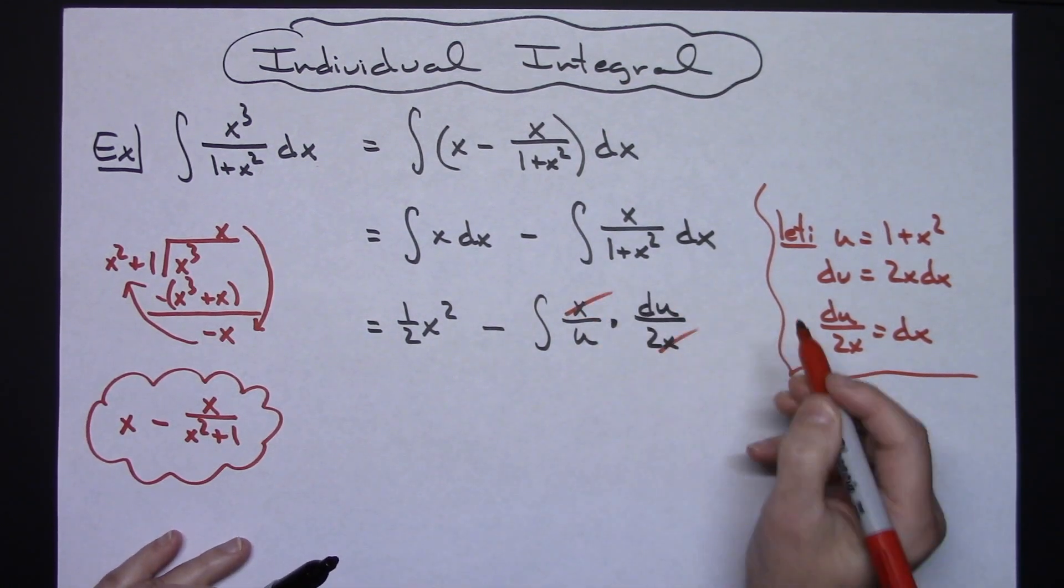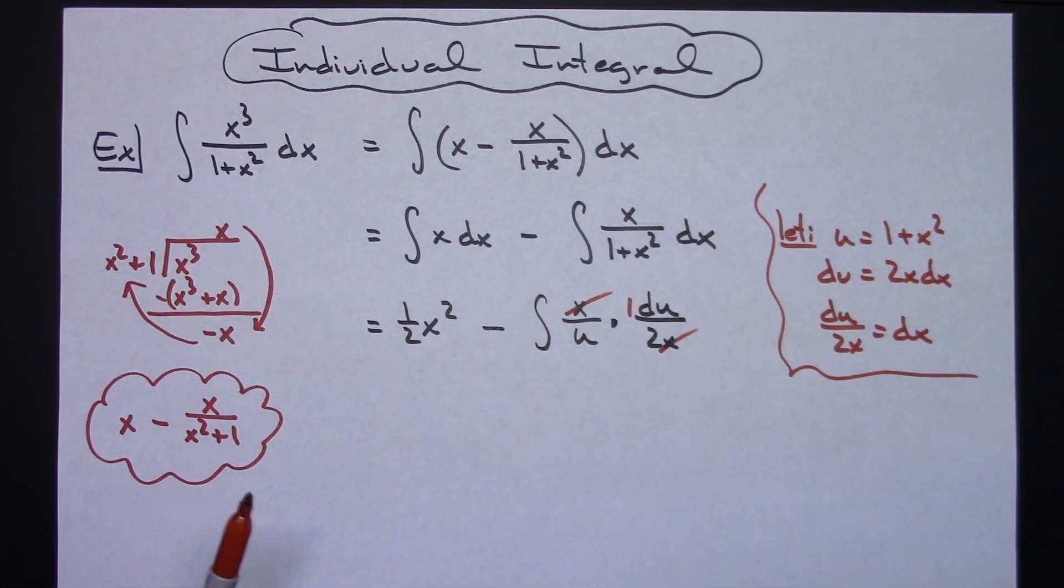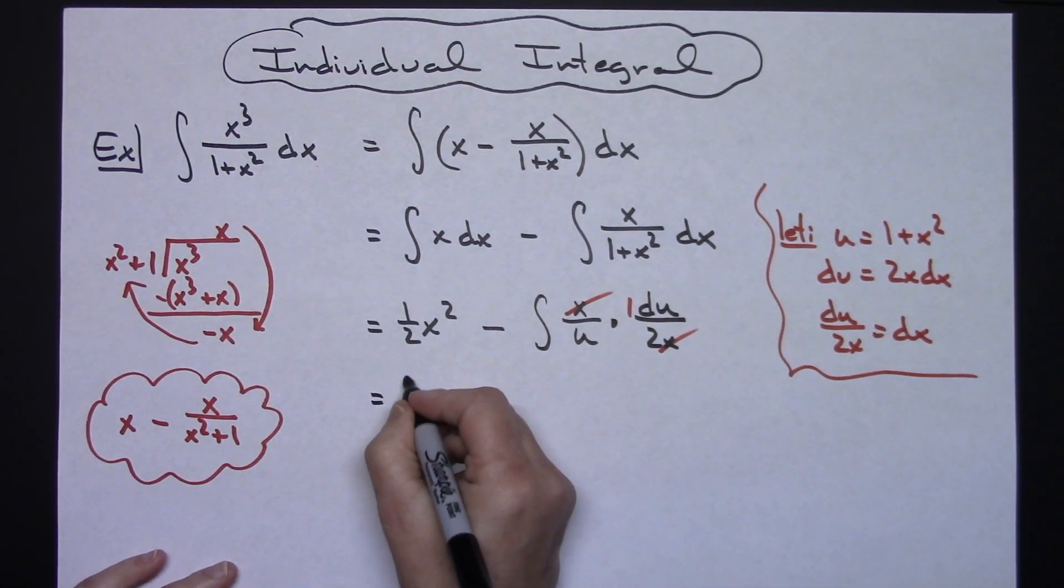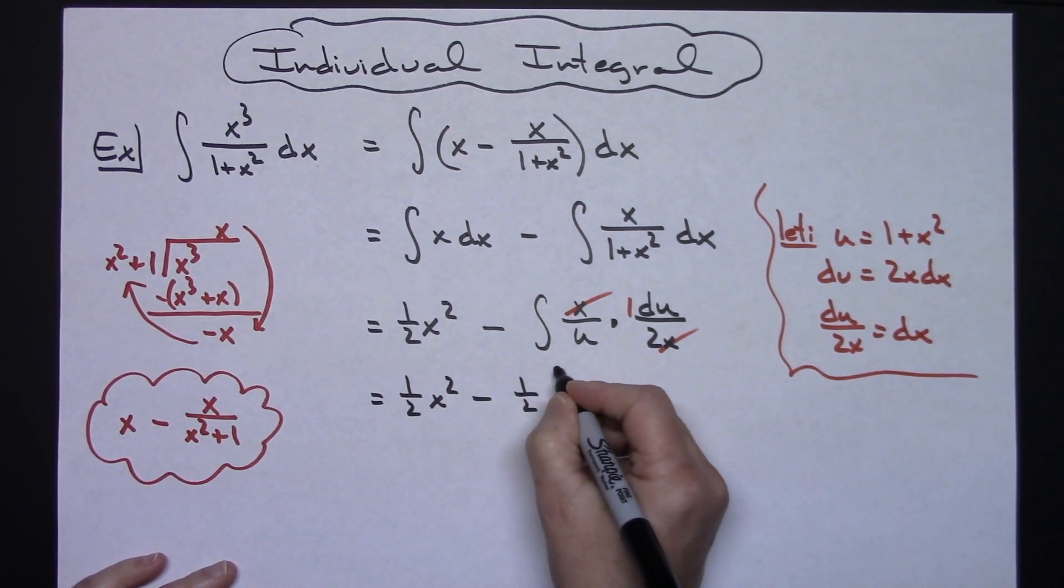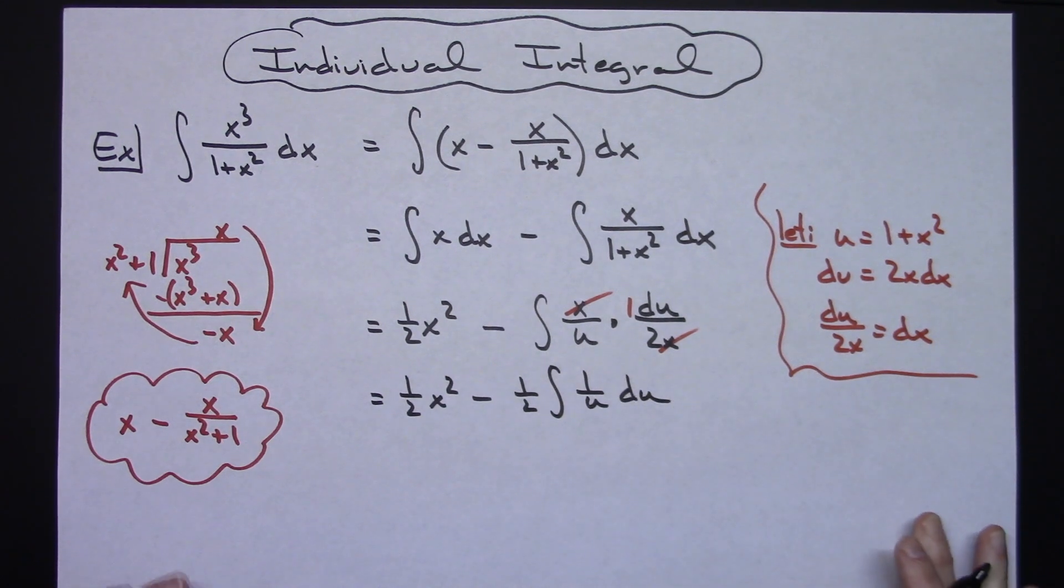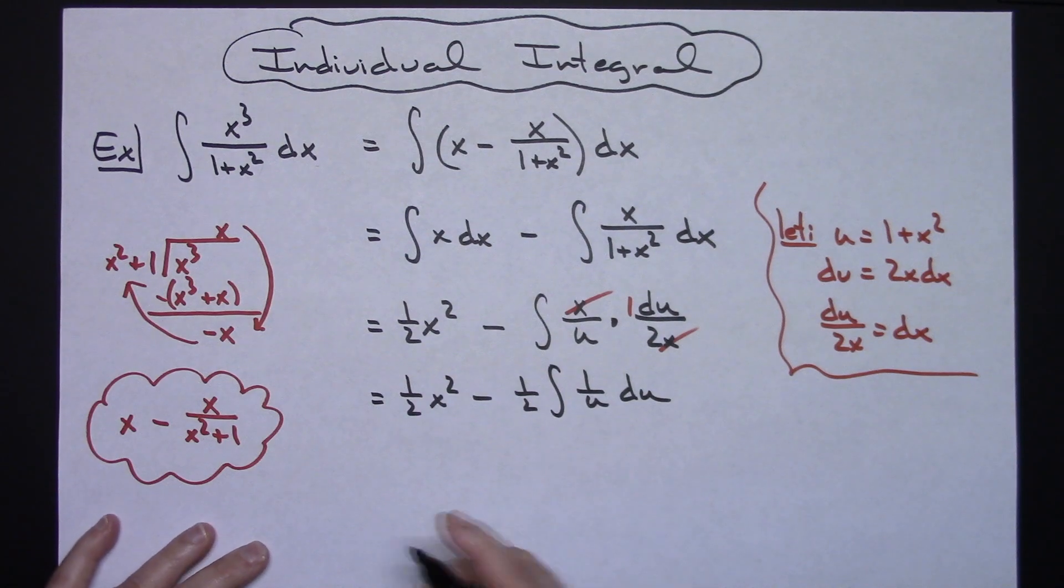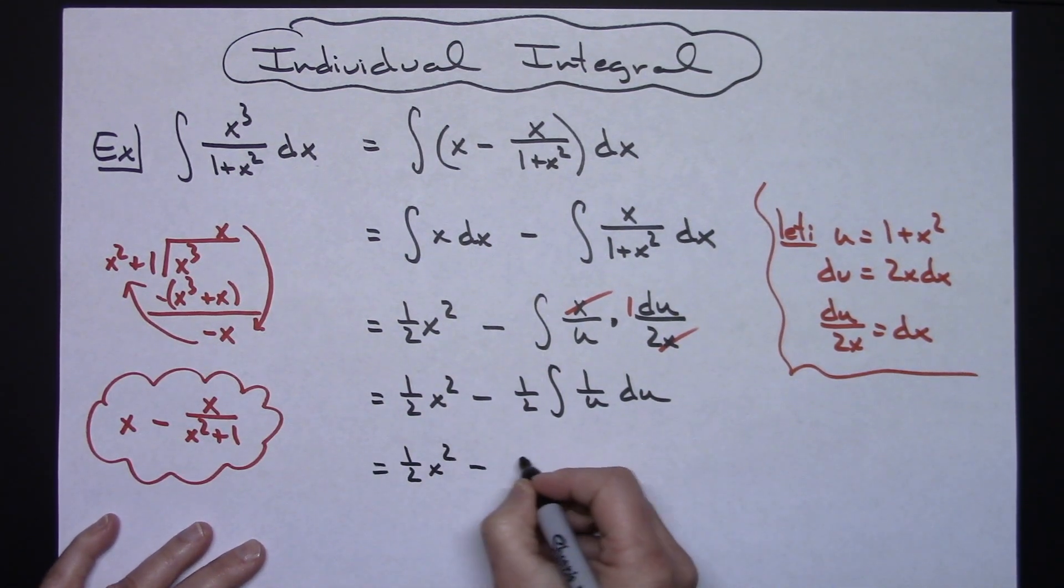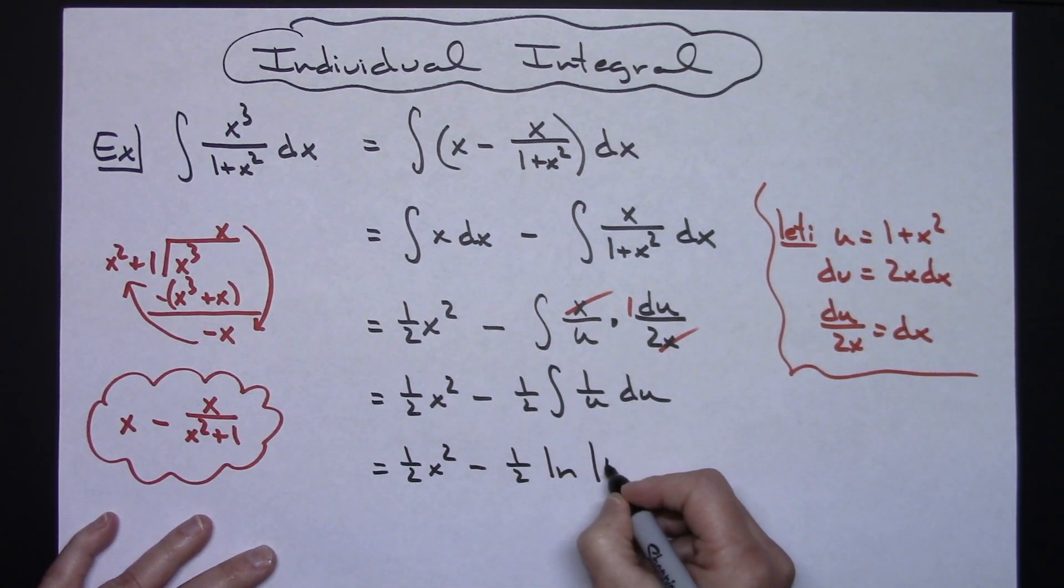That's going to let me cross those two x's out, and it's going to let me pull out a 1 half out in front of that integral. So we'll have a 1 half x squared minus a 1 half the integral 1 over u du. And then hopefully everyone knows that this integrates to natural log absolute value of u. So then we'll have a 1 half x squared minus a 1 half times a natural log absolute value of u plus c.